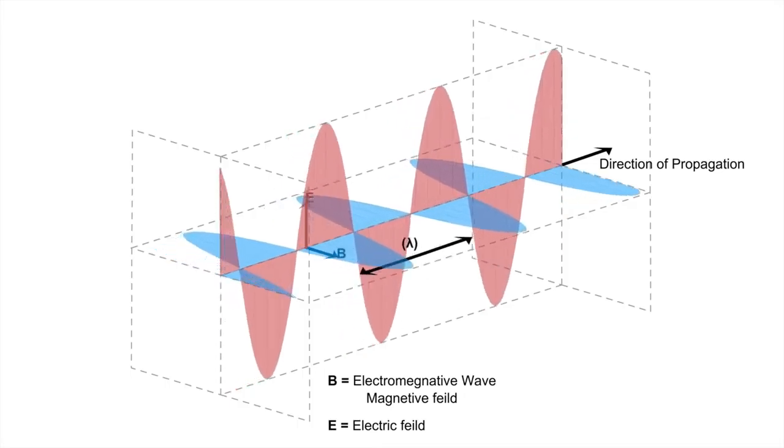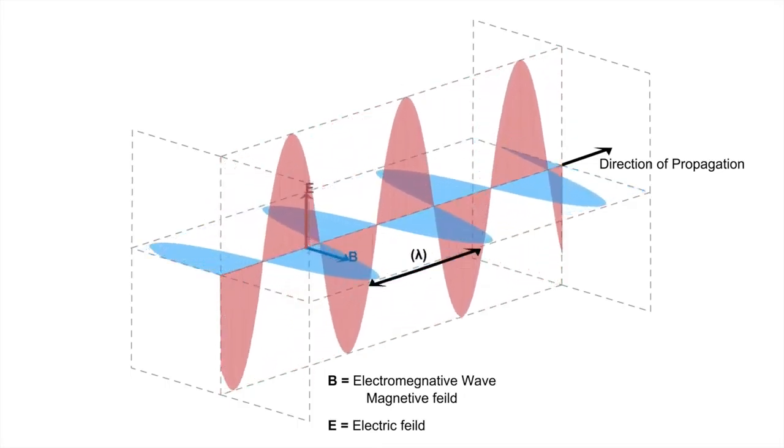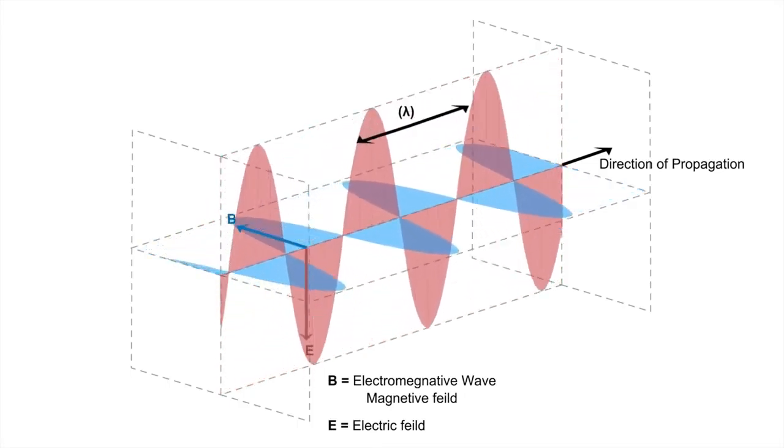Scientists have observed the effects of this expansion through various observations, such as the red shift of light from distant galaxies. Red shift indicates that as the universe expands, light waves are stretched and shifted to longer wavelengths, moving them toward the red end of the spectrum.